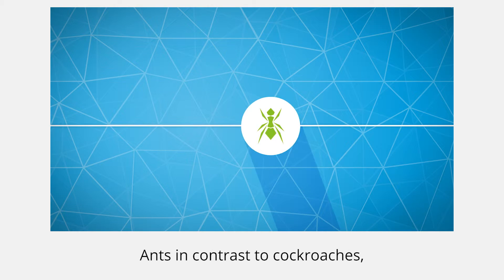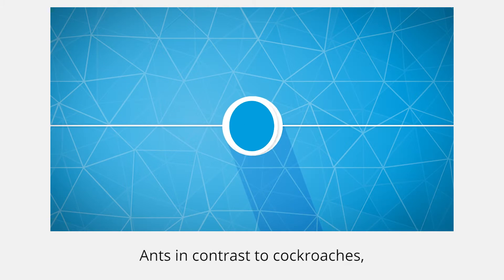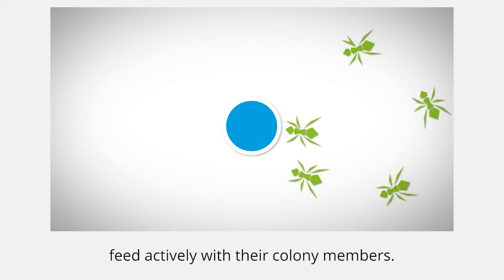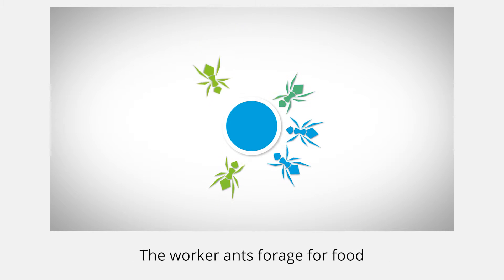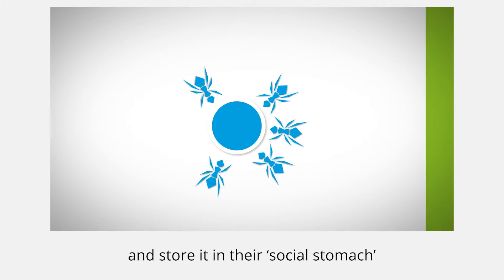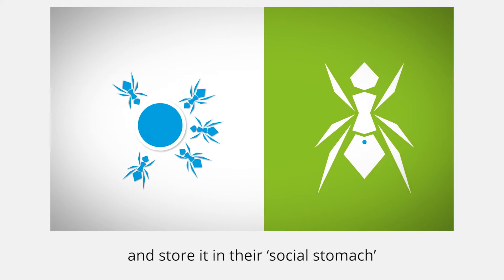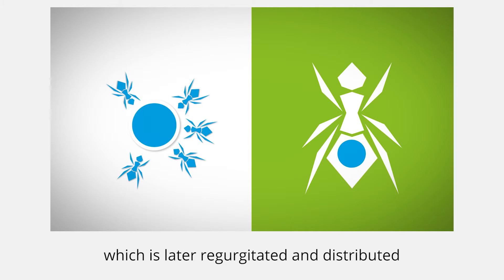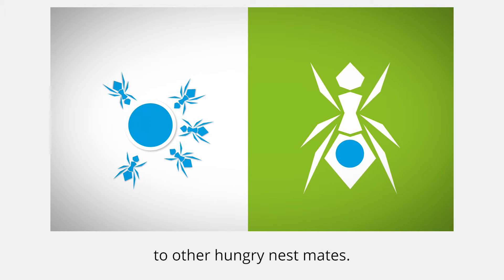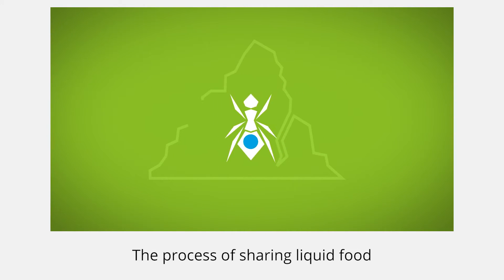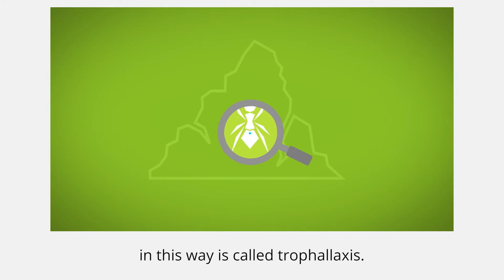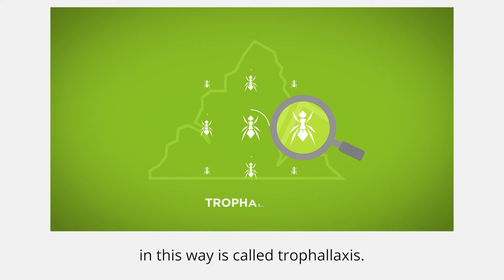Ants, in contrast to cockroaches, feed actively with their colony members. The worker ants forage for food and store it in their social stomach, which is later regurgitated and distributed to other hungry nest mates. The process of sharing liquid food in this way is called trophallaxis.